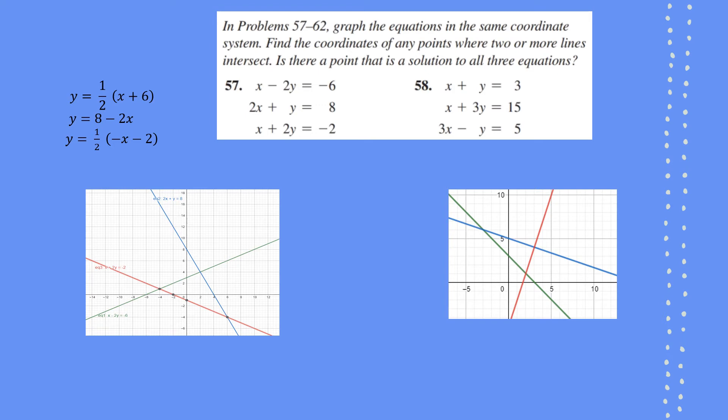For the first equation, the y value is half of x plus 6. For the second equation, y equals 8 minus 2x. And the third equation, y equal to half of negative x minus 2. When we graph this in our graphing calculator, we can check whether there is an intersection of all three lines.